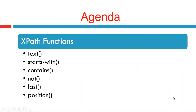Now let's see the agenda of this topic. The XPath functions are: text, starts-with, contains, not, last, and position. Let's see them one by one in detail.